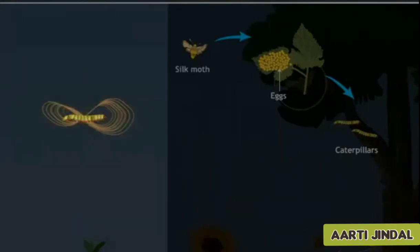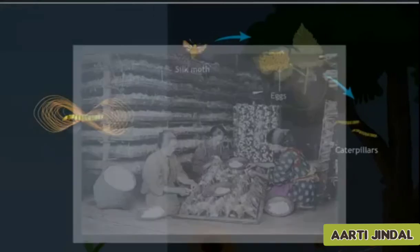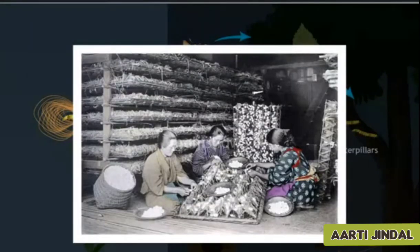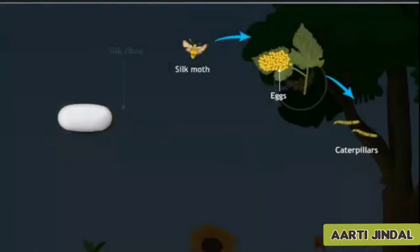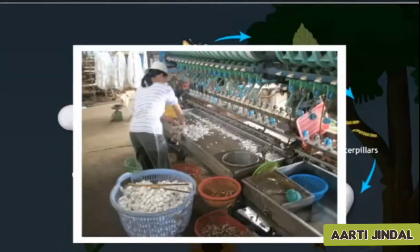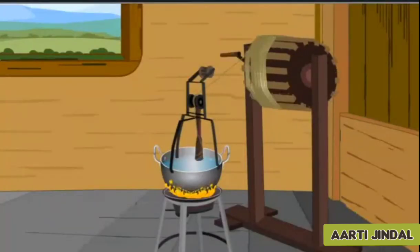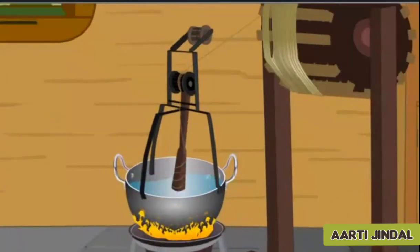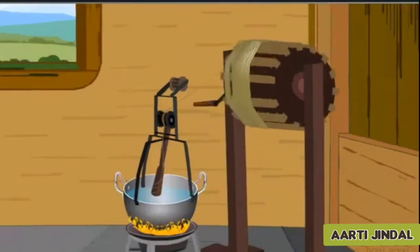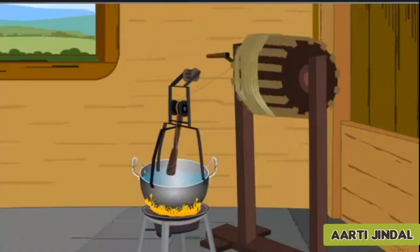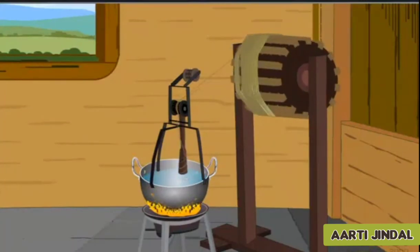These cocoons are then collected by farmers and processed to form silk fibers. Cocoons are kept exposed to the sun, steam, or boiled for separating out the silk fibers. The process by which silk thread is separated from the cocoon is called reeling the silk. Then, the spinning of silk fibers into threads is done.